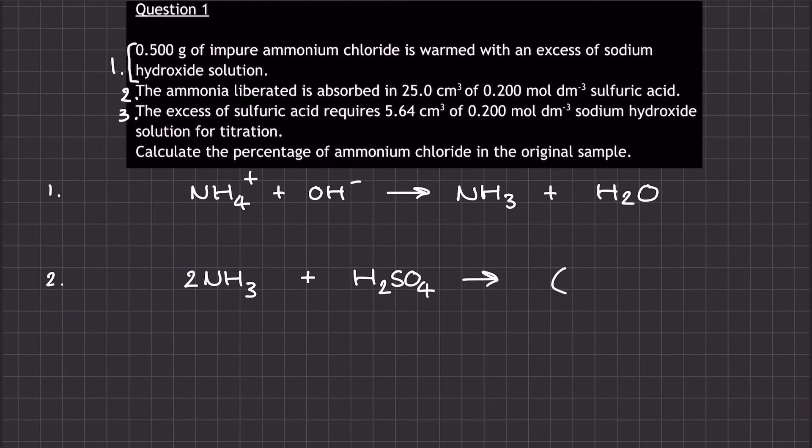In the second stage, I've got ammonia reacting with sulfuric acid to make ammonium sulfate. Careful with the balancing on this one and with the formula of the product. And then in the third equation, I've got sodium hydroxide reacting with sulfuric acid to make sodium sulfate and water.